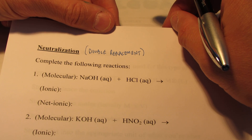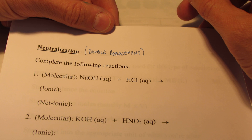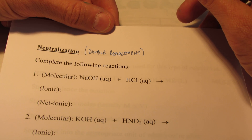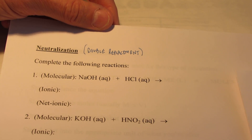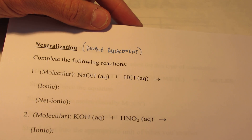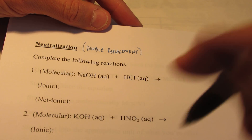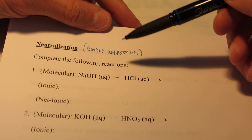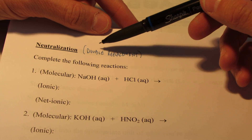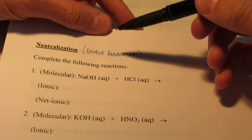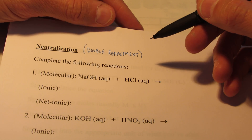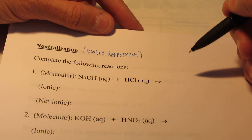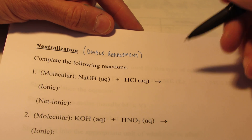We have a lab coming up soon, and we need to be able to write neutralization reactions and be able to do some stoichiometry that involves neutralization reactions. The first thing you have to know is that this will feel like somewhat of a review, because what we're about to do are all double replacement reactions. We've actually done this much earlier in the year, with several examples where we predict products and balance equations.